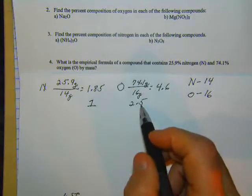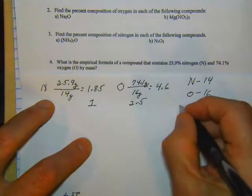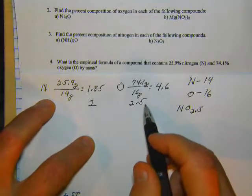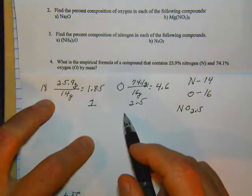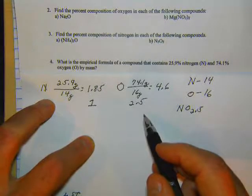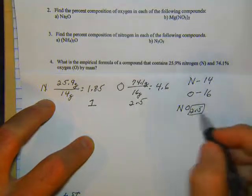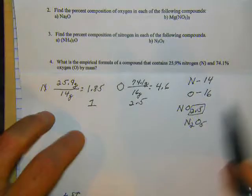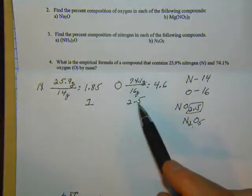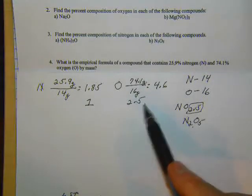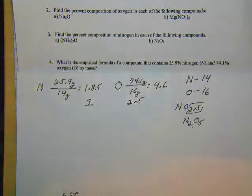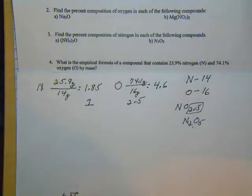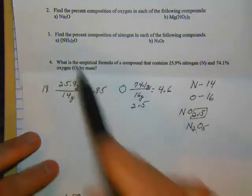We can't have 2.5 for the lowest whole number ratio — this is saying N to O is 1 to 2.5, which doesn't work. The 0.5 issue: you could round up to 3 and say NO₃, or round down to 2 and say NO₂, or multiply everything by 2 to get N₂O₅. I would probably go with N₂O₅. I don't love this problem — if it were 2.7 I'd say 1 to 3, or 2.2 I'd say 1 to 2. On an assessment I'll make sure it comes out cleaner.